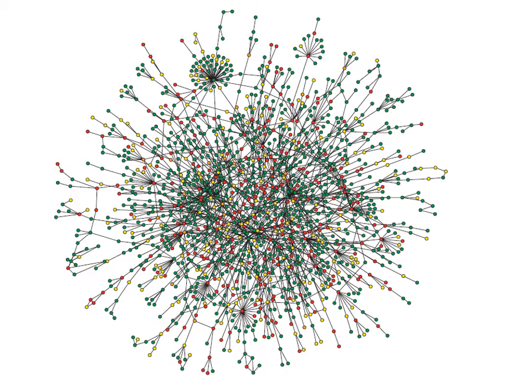We are going to see this network many times today, so don't get scared. I know it's very complex and there's a lot of information here. This is a typical protein-protein interaction network — each dot is a protein, and there's a link between them when they interact with each other. This is from the yeast protein-protein interaction network. Pause and think about what kind of information you can get from this before we go further.